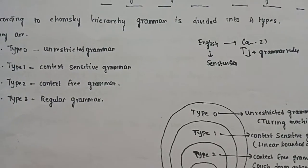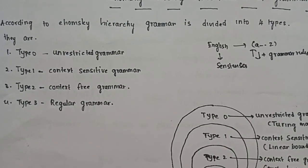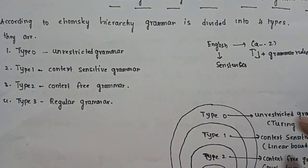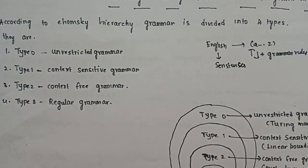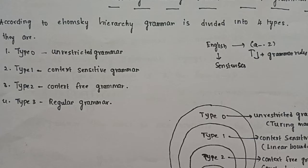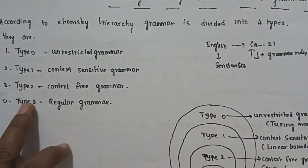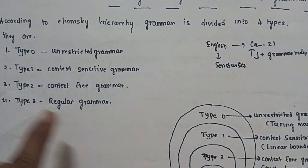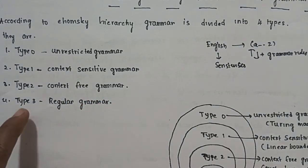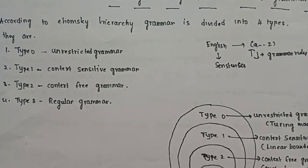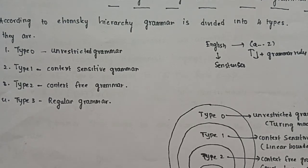According to Chomsky's hierarchy, grammar is divided into 4 types: type 0, type 1, type 2, and type 3. According to Chomsky's hierarchy, formal grammar is divided into these 4 categories.